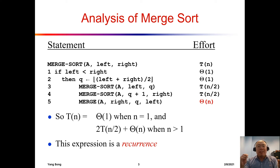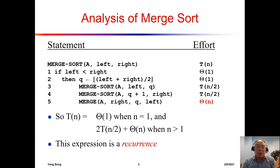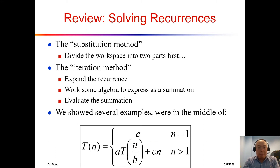Based on this polynomial of n, we figure out the Big O and Big Omega, and put them together to get Big Theta. So how do we solve this recursive T(n)? There are three different ways.